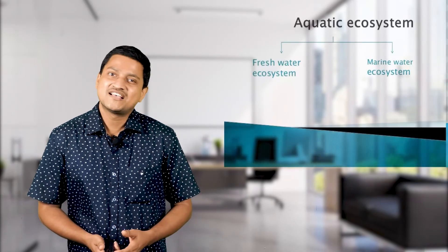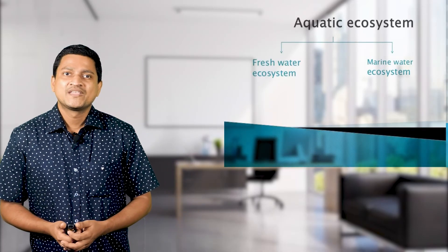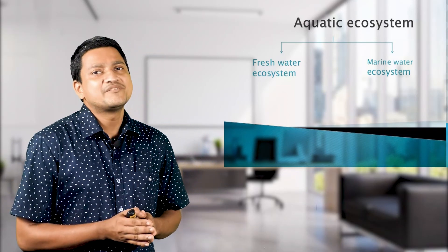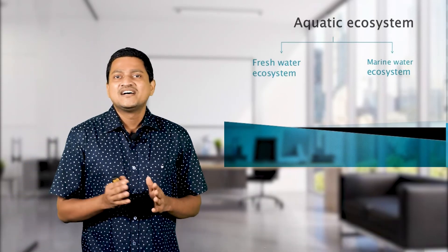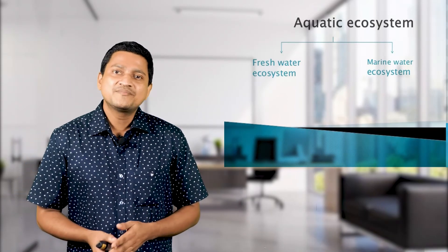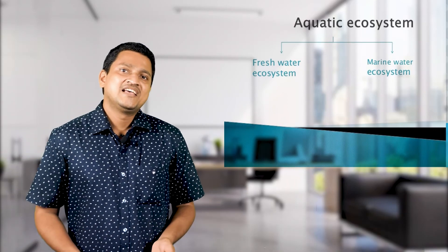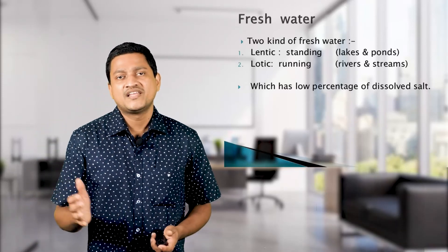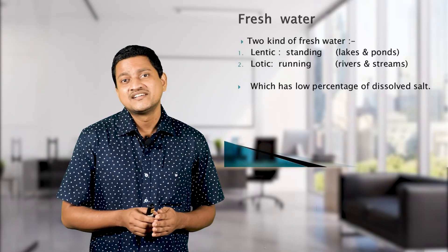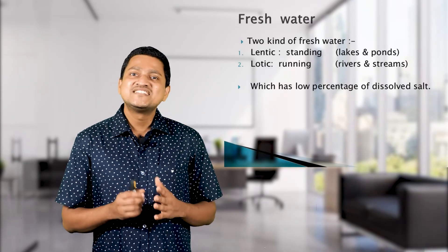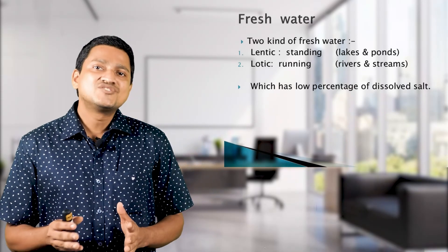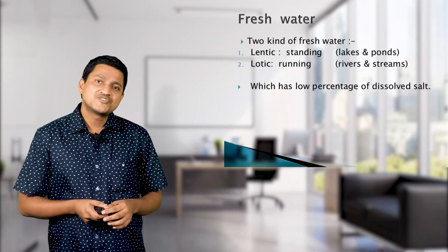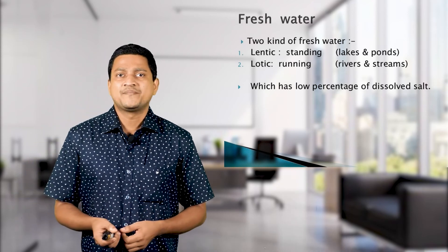Aquatic ecosystems are broadly classified into two groups: freshwater ecosystems and marine water ecosystems. The freshwater ecosystem has very low salt content, while in marine water ecosystems the salt content is high. The freshwater ecosystem is further classified into two kinds — the first is lentic. Lentic means standing water, for example lakes and ponds.